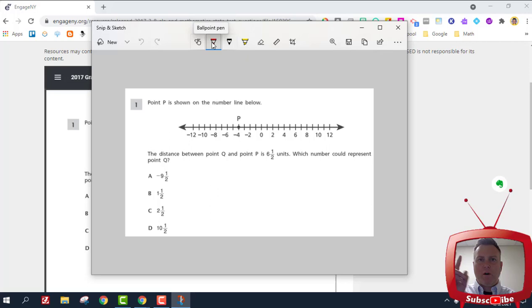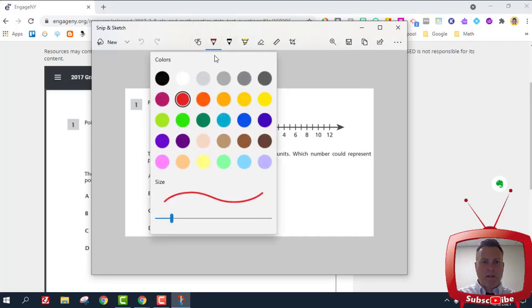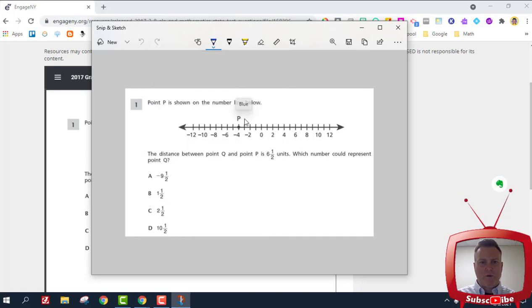Next is what they call the ballpoint pen. If we click on it, we have a lot of different colors and we can change the size and thickness of the line. If I change it to a blue color, I could draw on this image or highlight what I want my students to look at by drawing an arrow.